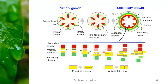This photograph shows the divisional activity of the vascular cambium. There are two types of divisions: the periclinal division and the anticlinal division. Periclinal divisions in cambium cells are carried out in the horizontal direction. In the case of anticlinal division, the vertical division occurs. This cell shows the periclinal division, and this cell shows the anticlinal division.